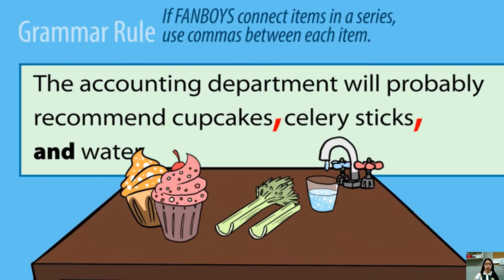If FANBOYS connect items in a series, remember to use commas between each item. For example: 'The accounting department will probably recommend cupcakes, celery sticks, and water.' There are four items, so you remember — if there is a series of more than two items, you put a comma after each word to separate them.